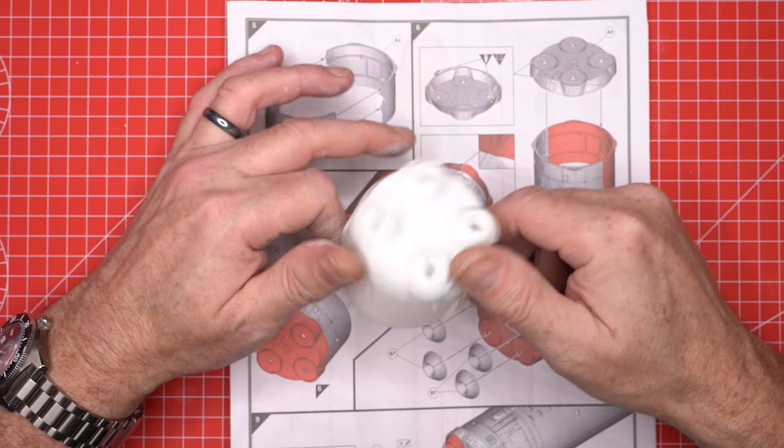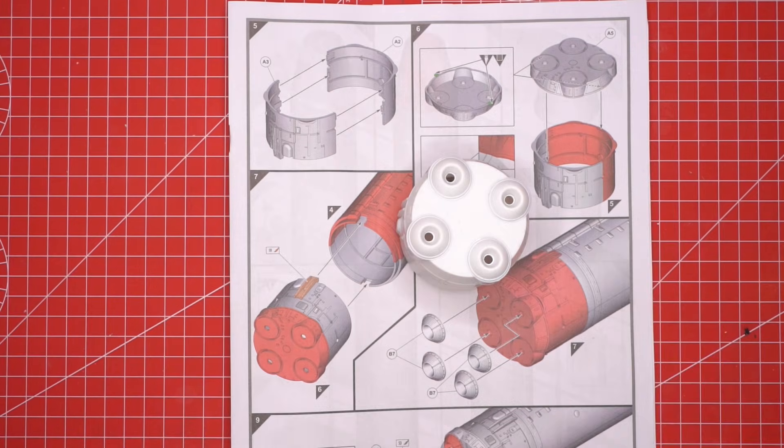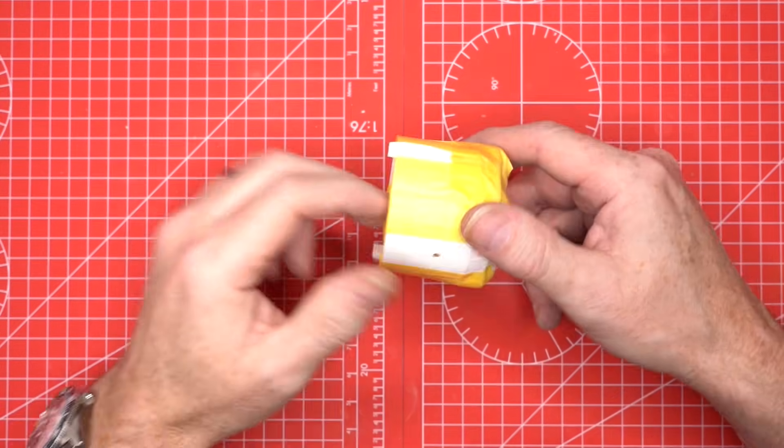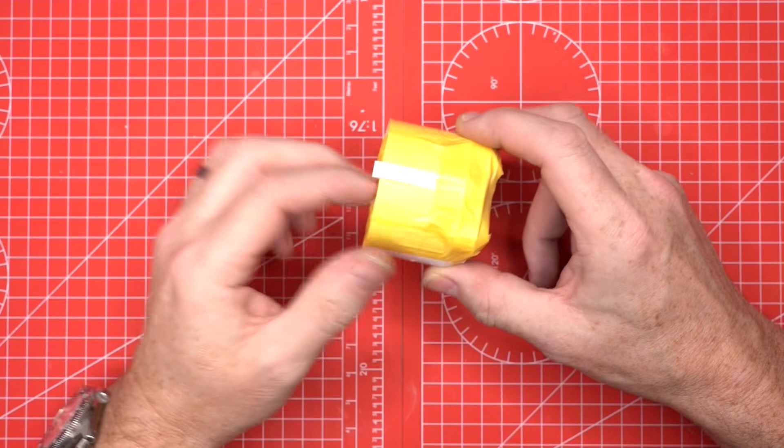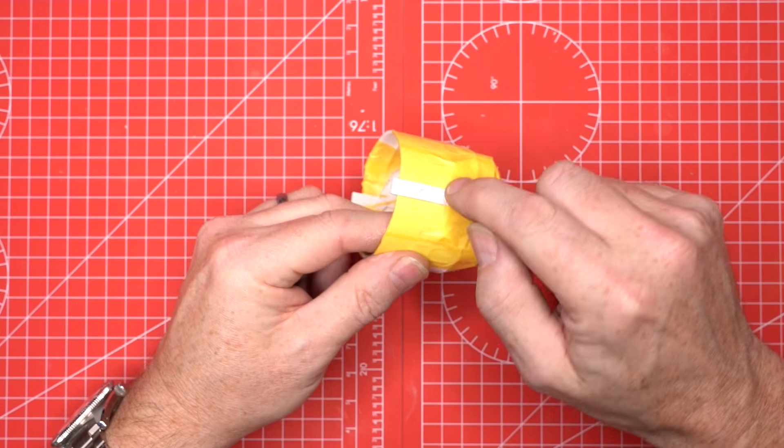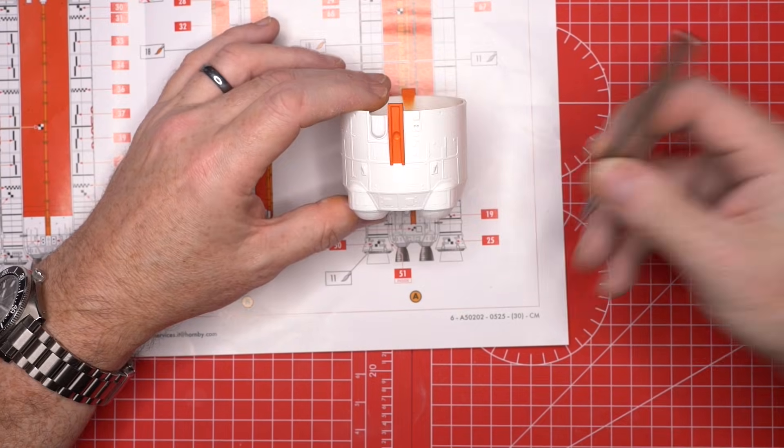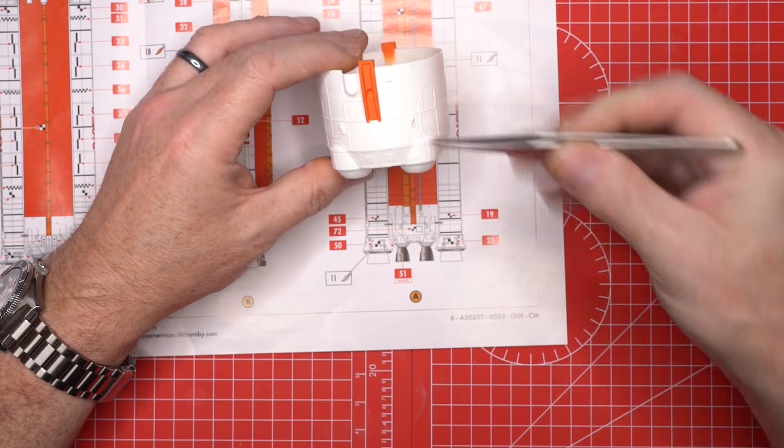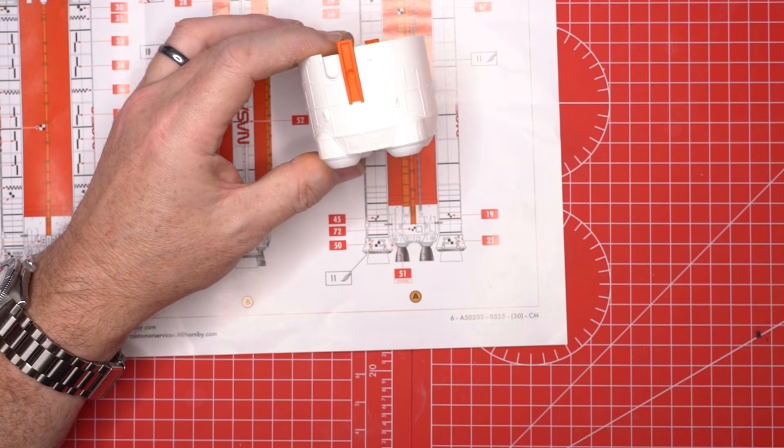We assemble the engine base—this is two halves together, followed by the two lower sections and the four internal nozzle caps. Each piece slots into place with intention. We prime the full unit white, then give it a satin varnish to lock the surface.